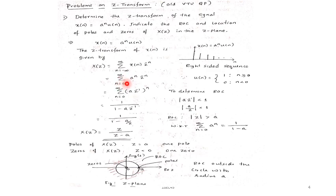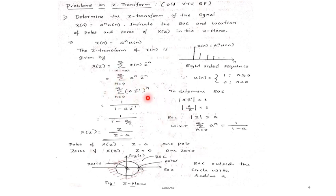Because of this right-sided sequence we will consider the limit from 0 to infinity: A to the power N times Z to the power minus N. Since X(N) is A to the power N times U(N) and U(N) is a right-sided sequence, I will consider the summation from 0 to infinity of A to the power N times Z to the power minus N. In the next step I write it as summation from 0 to infinity of (A Z inverse) to the power N. This is an infinite geometric series, which equals 1 by 1 minus A.